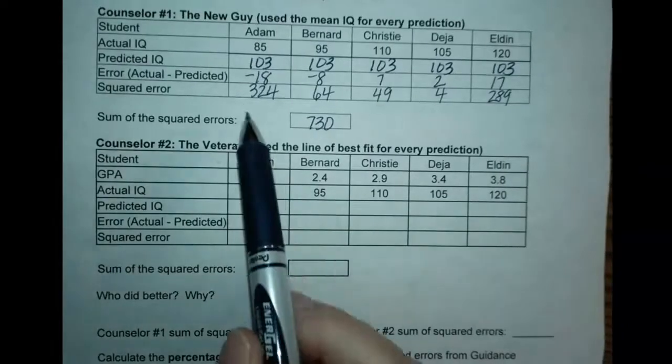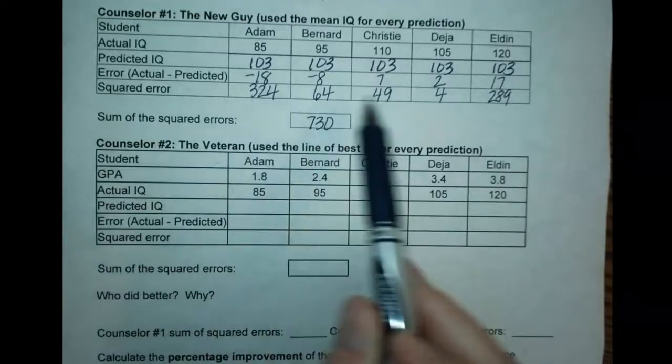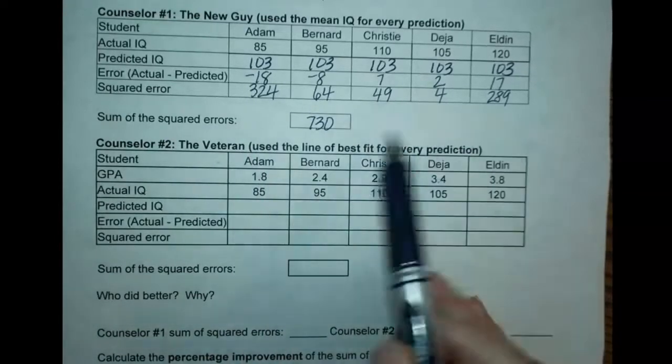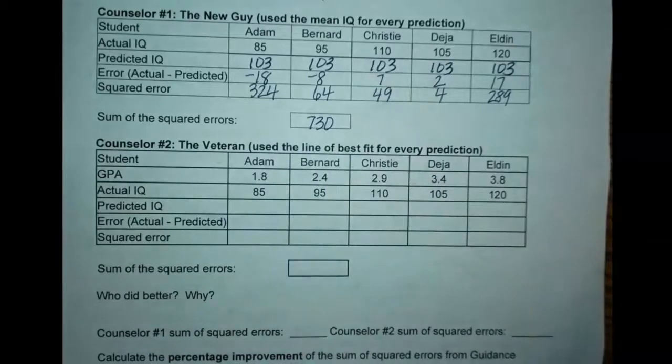Let's see how you did. Here are my squared residuals. When I add up all of my squared residuals, I got 730.